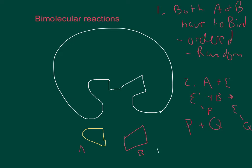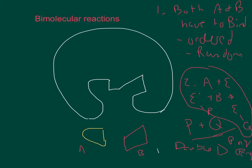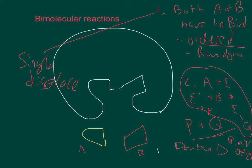That second way has a special name — it's called double displacement, or it's also called ping pong. By extension, the first mechanism is called a single displacement. So we can have single displacements that are ordered, single displacements that are random, or double displacements.